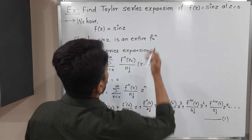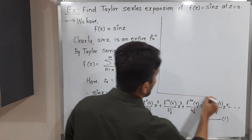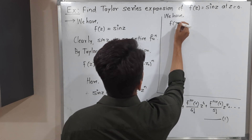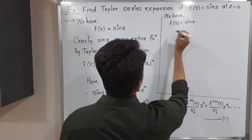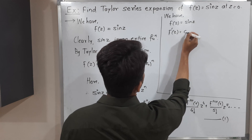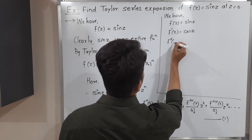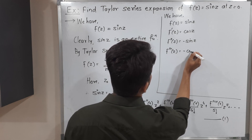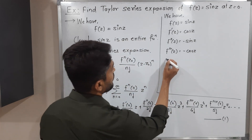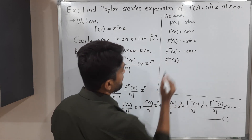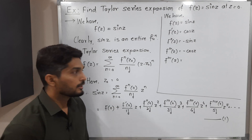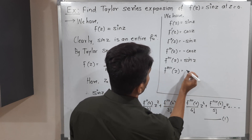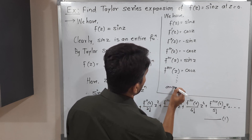We have the function sin(z). Let us find all its derivatives one by one. The first derivative of sin(z) is cos(z). The second derivative is minus sin(z). The third derivative: derivative of minus sin(z) gives minus cos(z). The fourth derivative: derivative of minus cos(z) gives plus sin(z). And the fifth derivative: derivative of sin(z) is cos(z), and so on. So in this way we found all the derivatives.